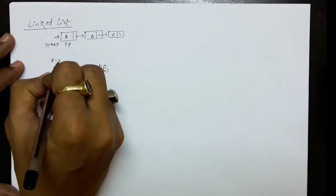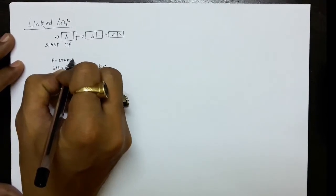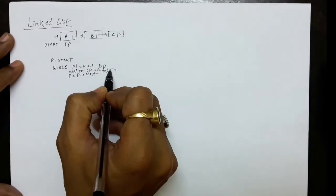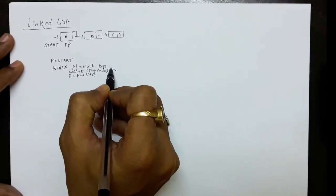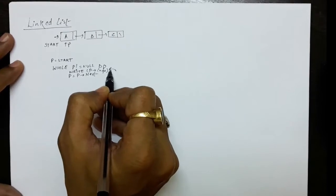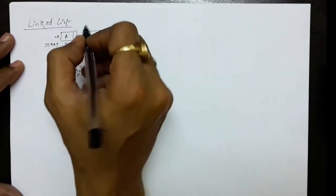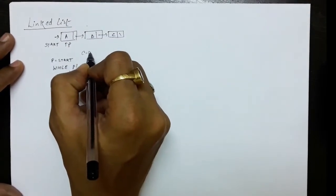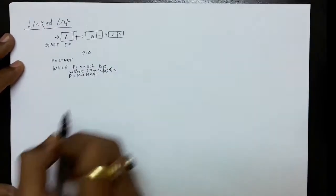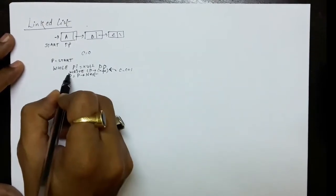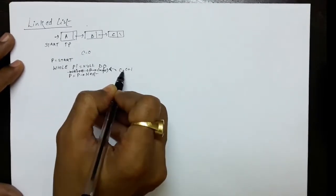So this was the method of traversal. If you have to find out the count of the nodes, instead of writing P dot info, you take a counter C initialized to 0 and update it here — so you write C equals to C plus 1 in place of writing P dot info.